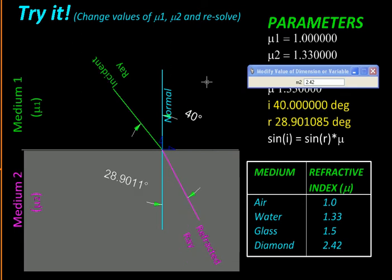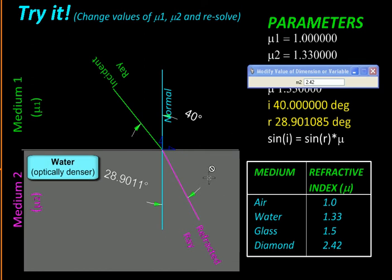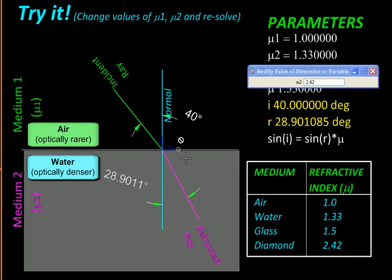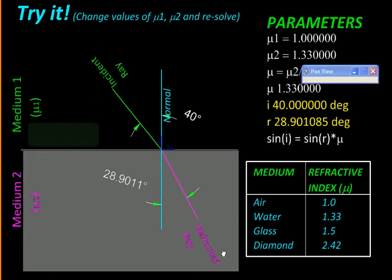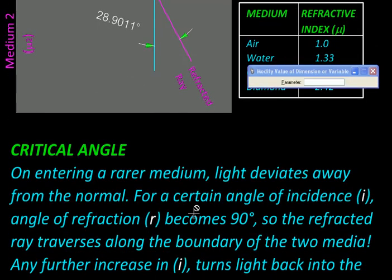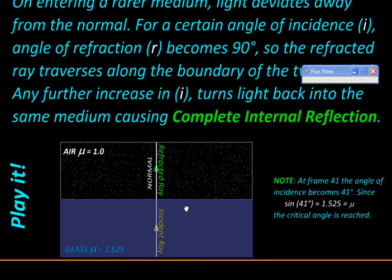You might be thinking: why does it bend in a certain way, and why has it bent towards the normal and not away from it? That depends upon the so-called optical density of the medium. Water is optically denser than air, so light travels slower in water, and therefore the incident ray gets deviated towards the normal.